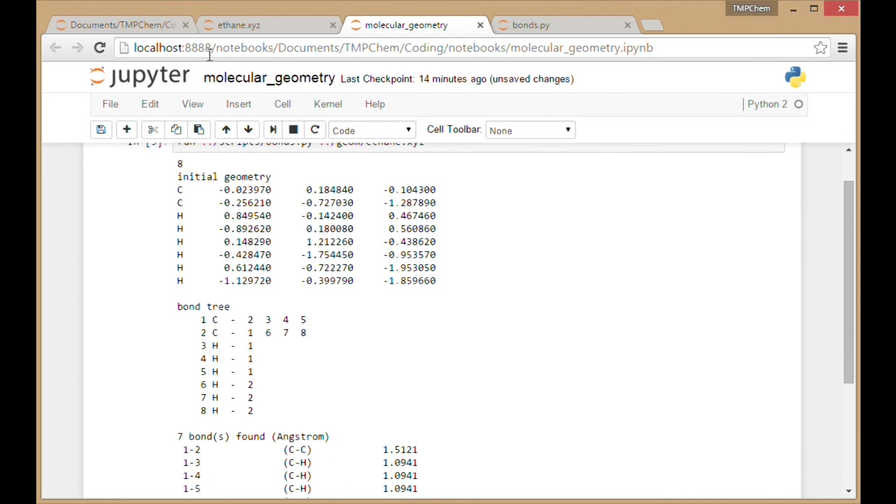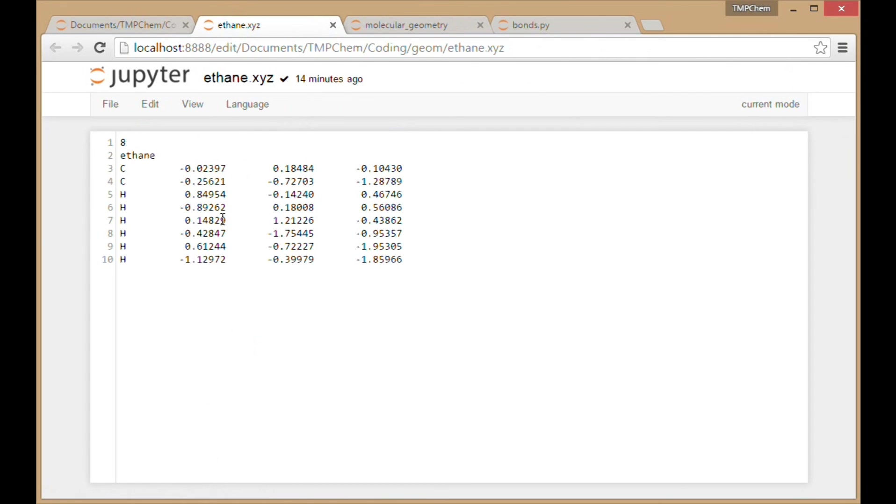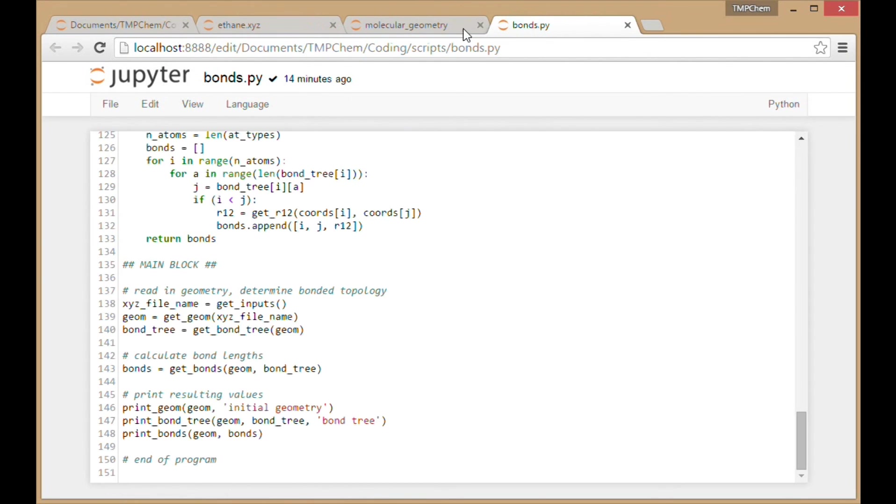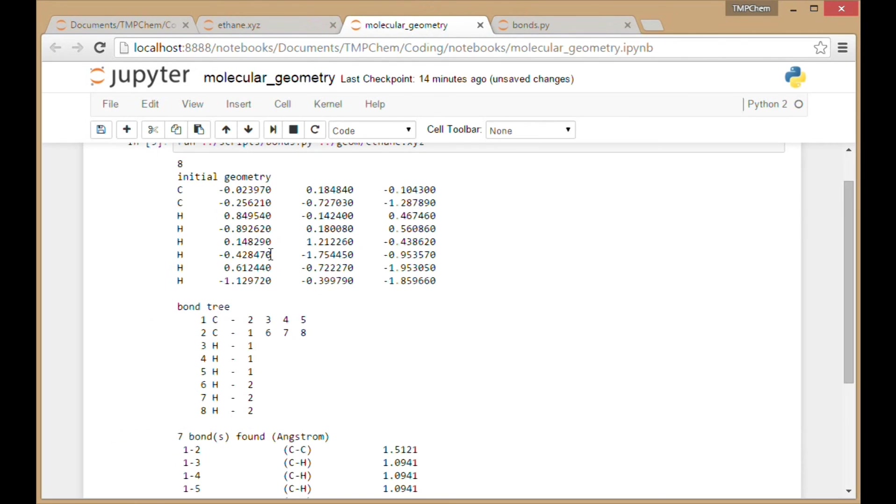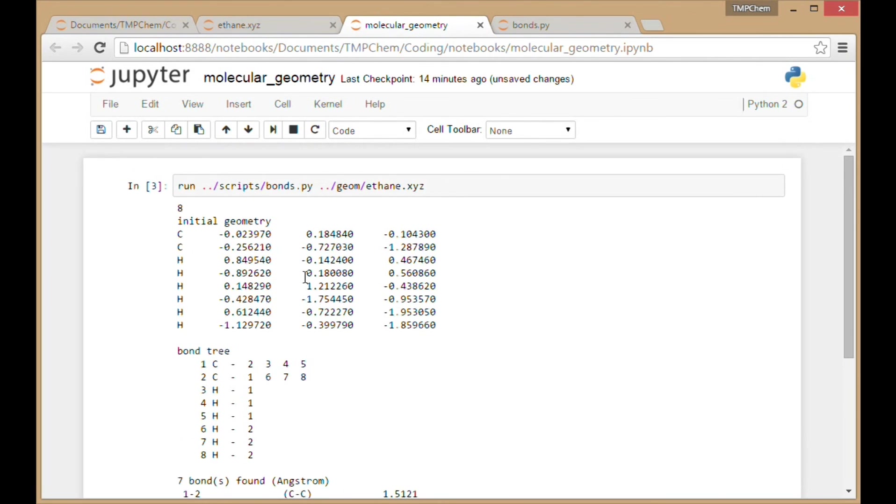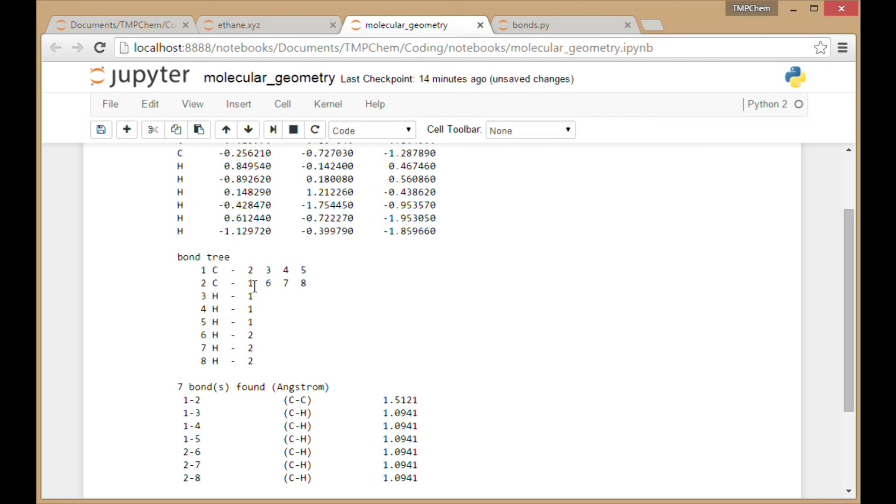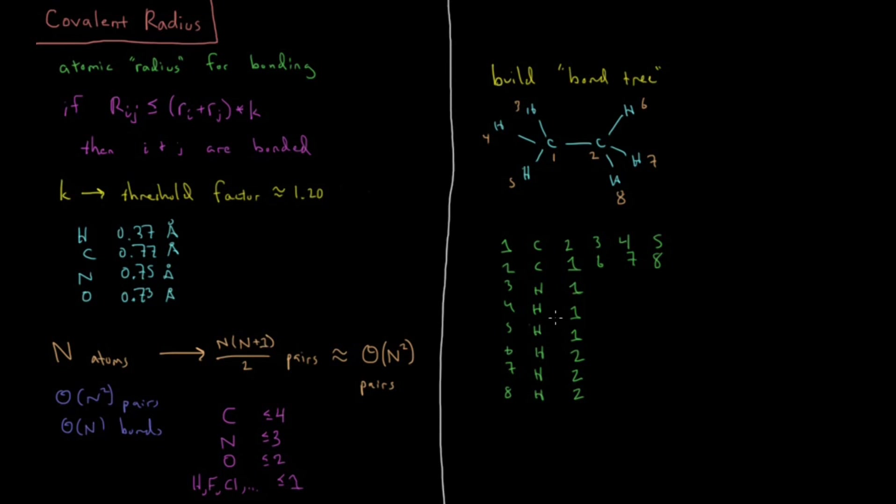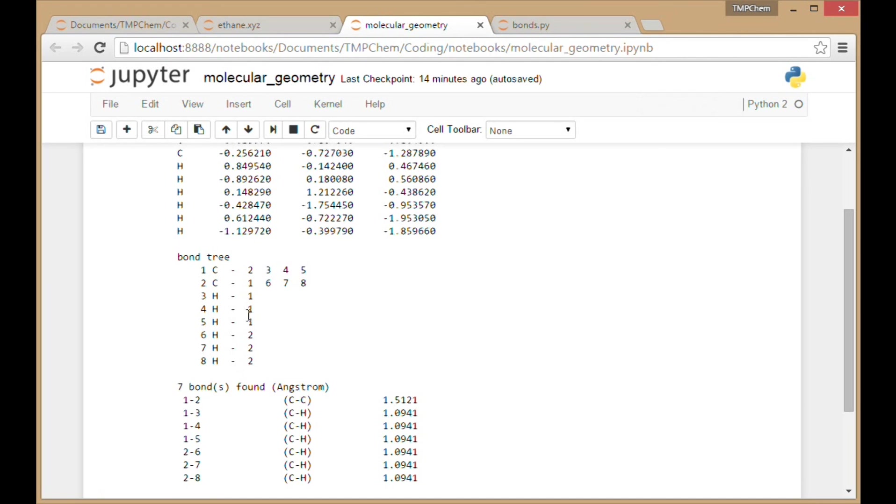It's printed out the original geometry, which is correct. It's printed out in a different format with an extra zero at the end of each. There's my bond tree: 2345-1678, 2345-1678, 111-222, and 111-222.